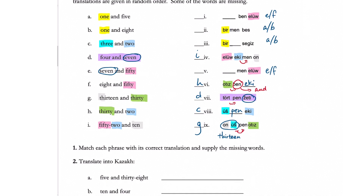Looking at number four, the 'and' that starts with M is following an 'i,' and because we know the number seven ends with an 'i,' it will definitely follow the pattern and have the 'and' that starts with M. So from this we know that e matches with number five, and f will definitely be number one. From the h highlighted in orange, we know that h is 's-e-g-i-z,' which goes in the blank in f.